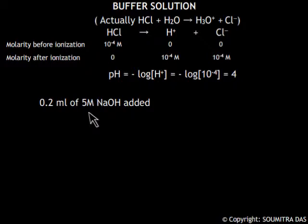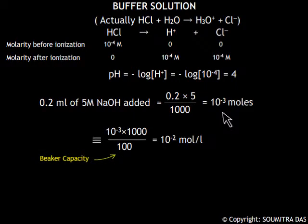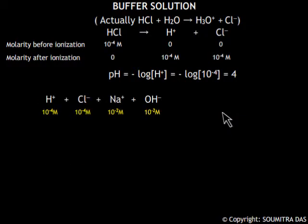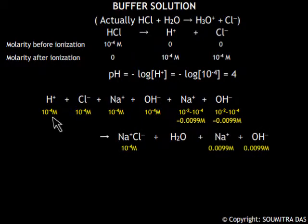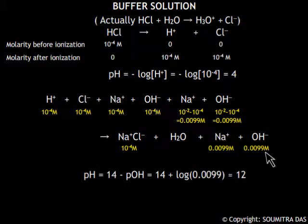When we added 0.2 ml of 5 molar NaOH solution, we actually added 10 to the power minus 3 moles in the beaker which has a capacity of 100 ml. Therefore molar concentration of NaOH added is equal to 10 to the power minus 2 moles per liter. Out of this, 10 to the power minus 4 moles per liter would be used up in neutralizing H plus ions. Therefore OH minus ions that are remaining is 10 to the power minus 2 minus 10 to the power minus 4 equal to 0.0099 moles per liter, which gives a pH which is approximately equal to 12. This was the case in beaker A.